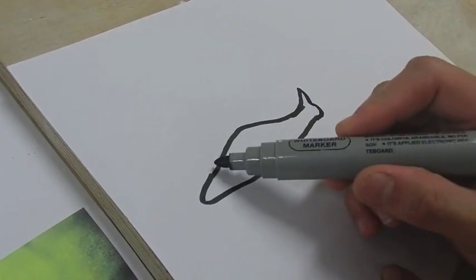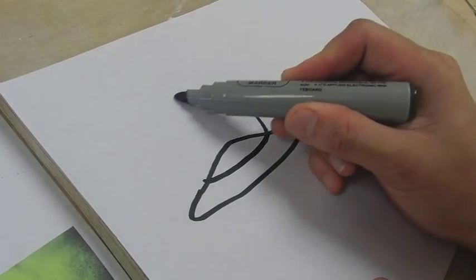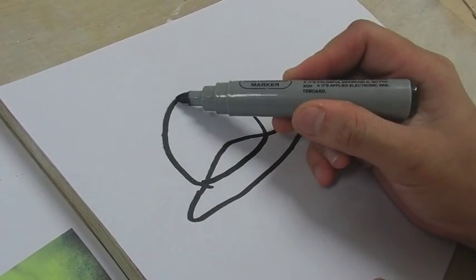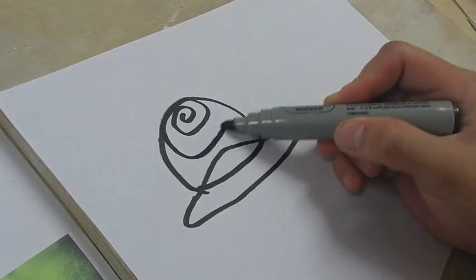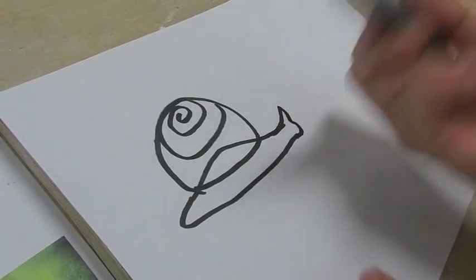Next one, we want to draw the shell. Now I'm going to do a round shell. So we're going to make a shape like this, and then it has some kind of swirl. You can do the swirl this way or this way, any way you want.